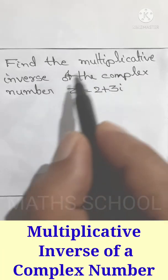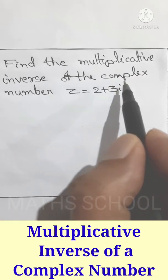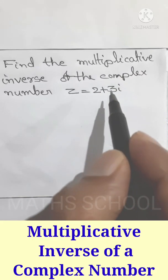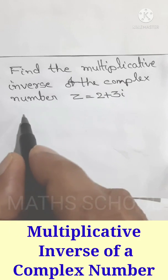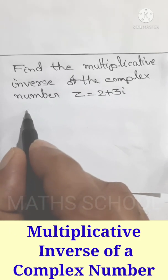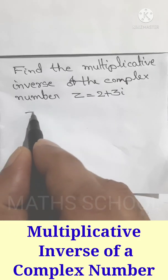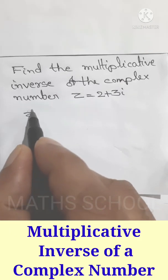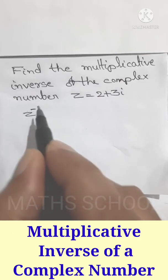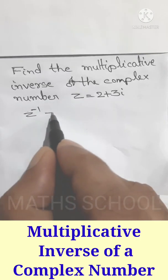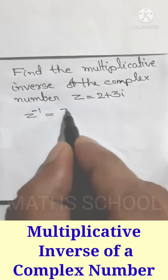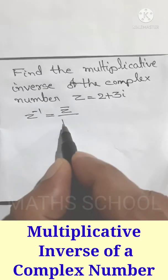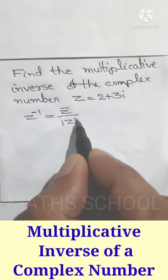Find the multiplicative inverse of the complex number z equal to 2 plus 3i. The multiplicative inverse of the complex number z is denoted by z inverse, and z inverse equals z conjugate divided by modulus of z squared.